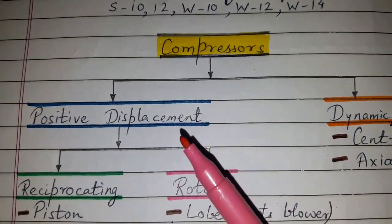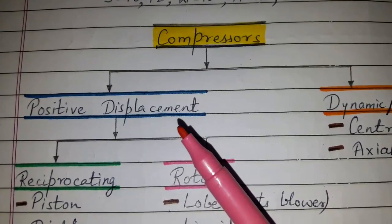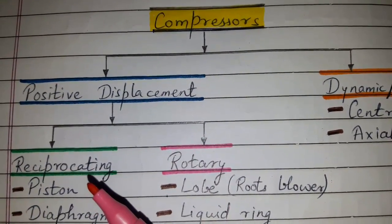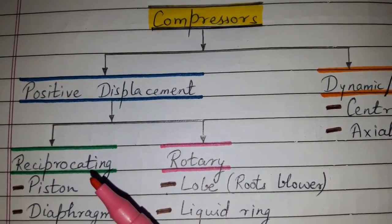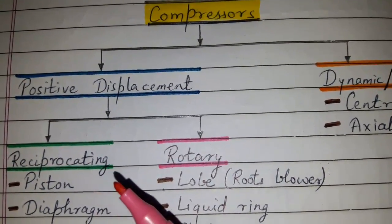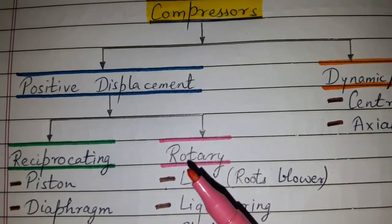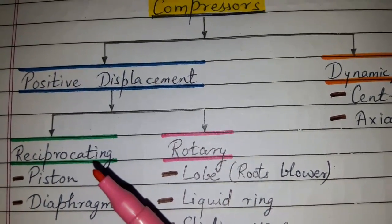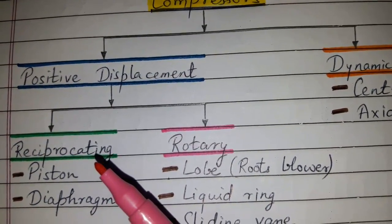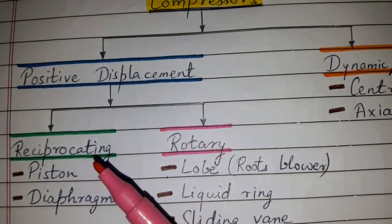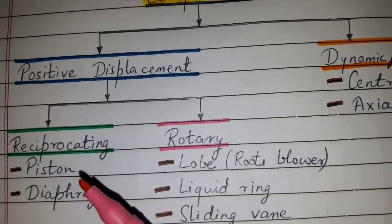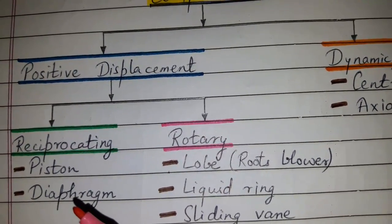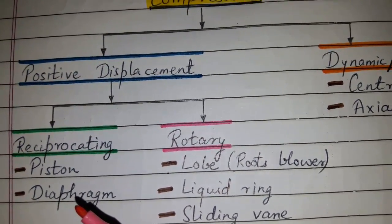Positive displacement compressors can be further classified as reciprocating compressors and rotary compressors. Reciprocating compressors can be further classified as piston type and diaphragm type compressors.